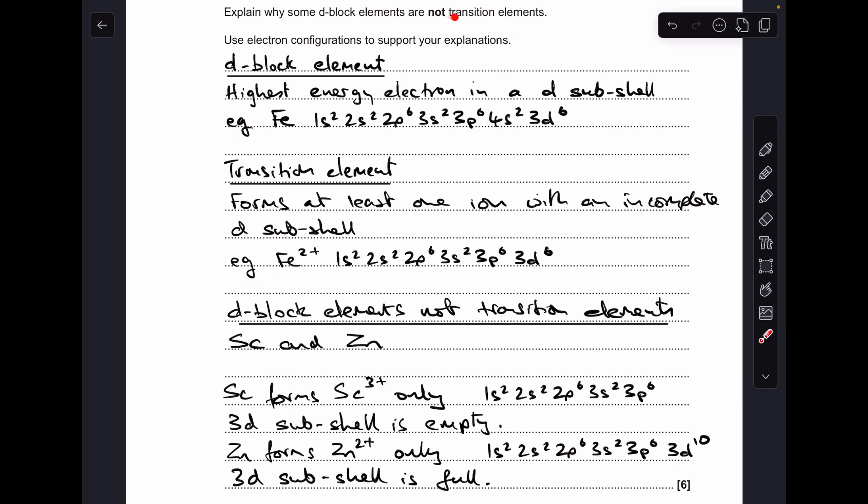And then finally, explain why some d-block elements are not transition elements. Well, that's scandium and zinc. We need to explain why scandium forms a 3+ ion only. There's its electron configuration, and we need to say the 3d-subshell is empty. And then for zinc, it forms the 2+ ion only. There's its electron configuration, and we need to say the 3d-subshell is full.